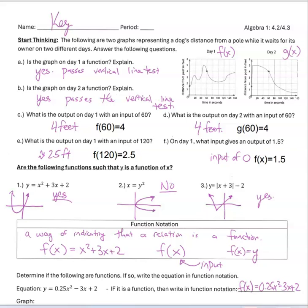We'll come back to the black writing in a second. We looked at three different equations, and I asked students — without the purple writing — are these functions? Basically the students said they didn't know. It might be a function, it might not. So I drew the graph of what the first one looked like, and they said yes, it passes the vertical line test. The next one — they didn't know until I drew it, and when they saw it didn't pass the vertical line test, they said no. The last one — once I made the graph, they saw it passed the vertical line test and said yes.